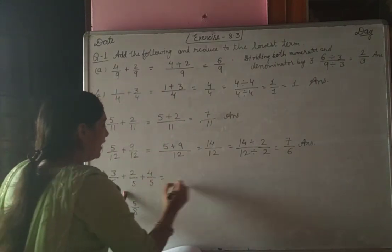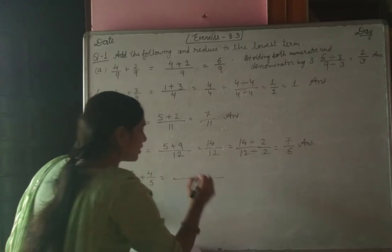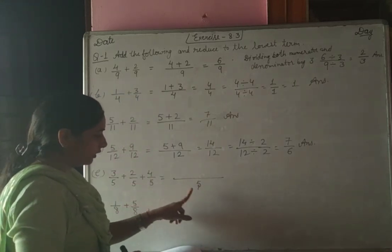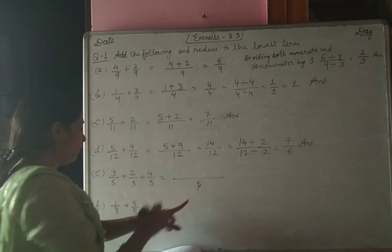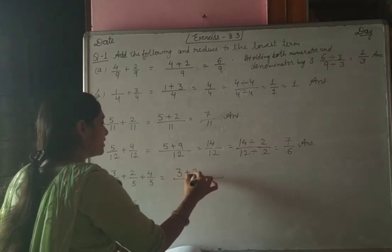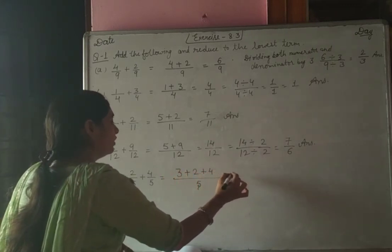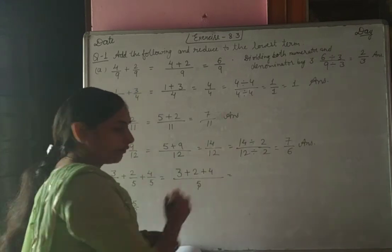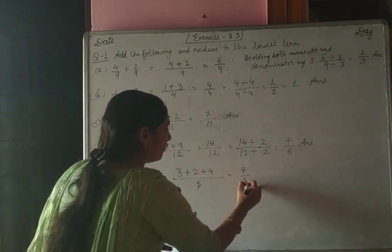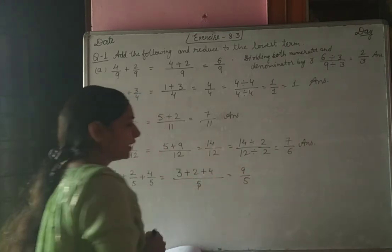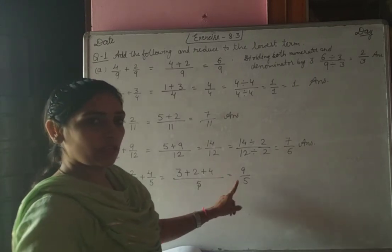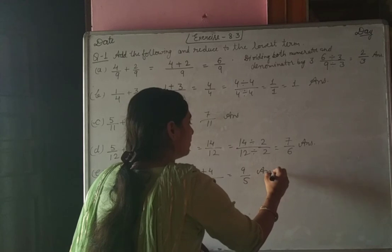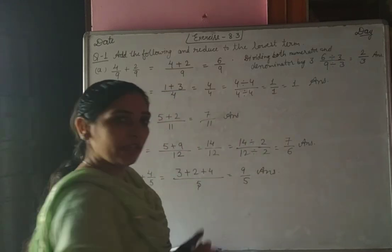Next: three fractions are given, all like fractions with denominator 5. The numerator stays the same: 3 plus 2 plus 4 — first 3 plus 2 is 5, then 5 plus 4 is 9 — giving 9 by 5. Since 9 and 5 have no common highest factor other than 1, our answer remains 9 by 5.